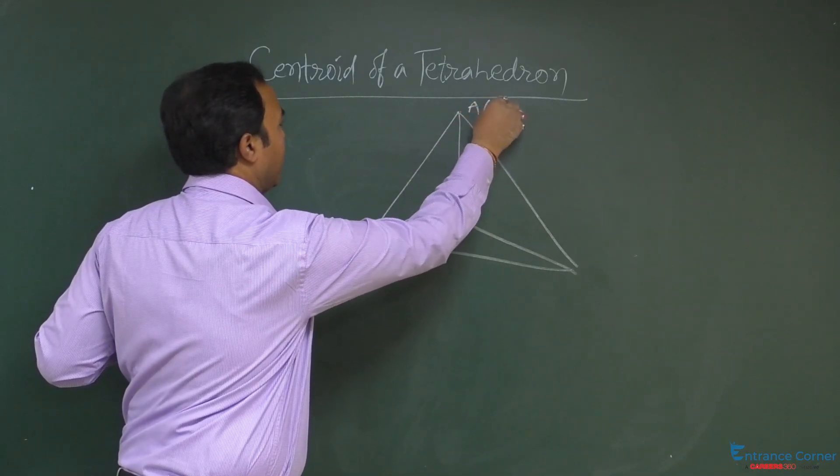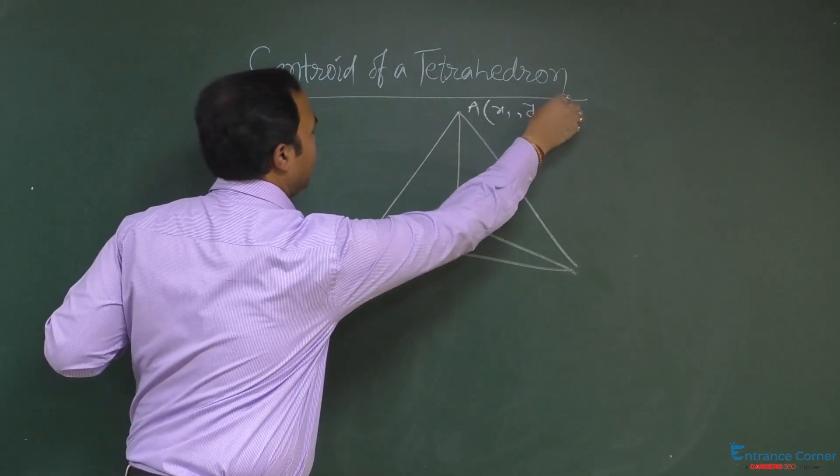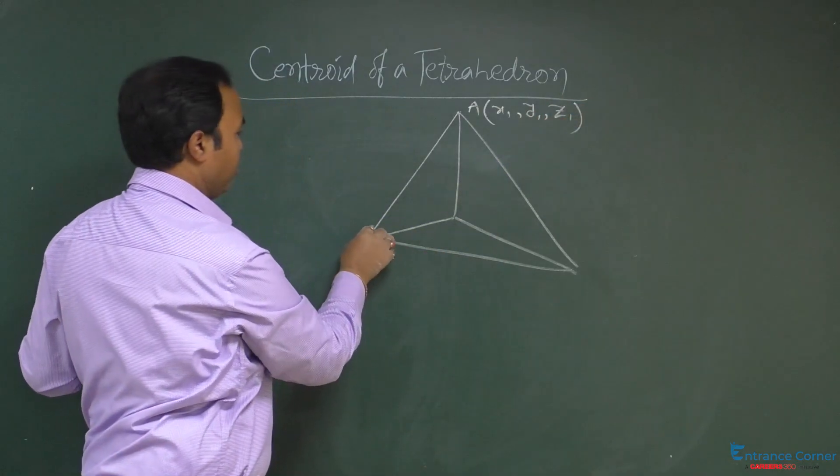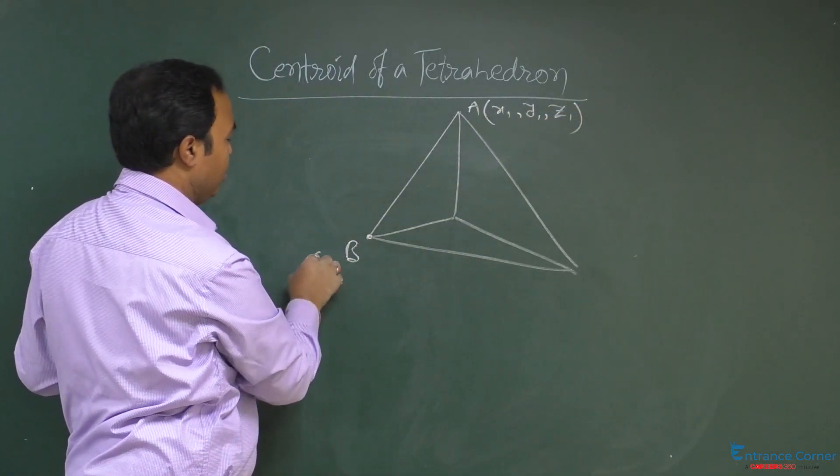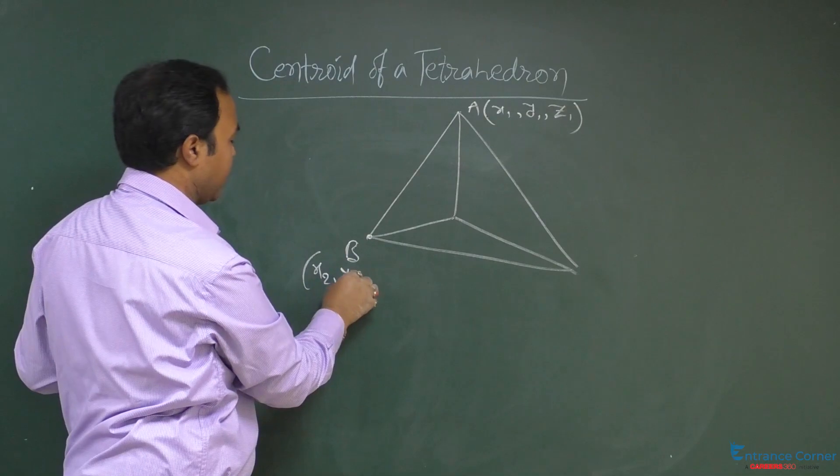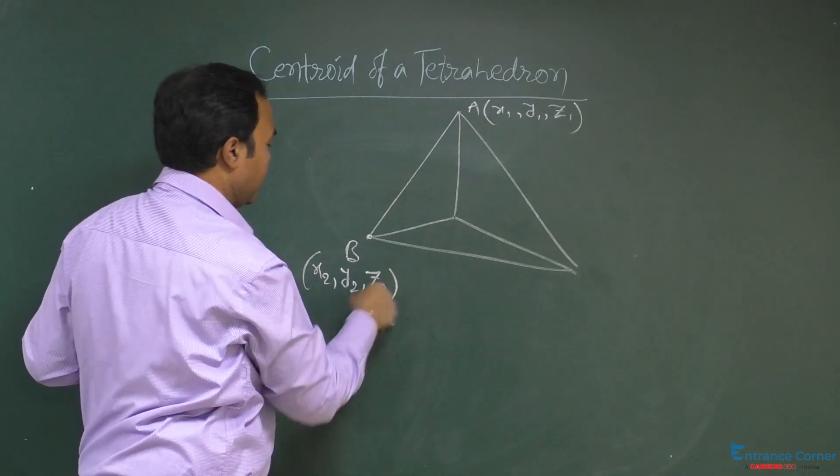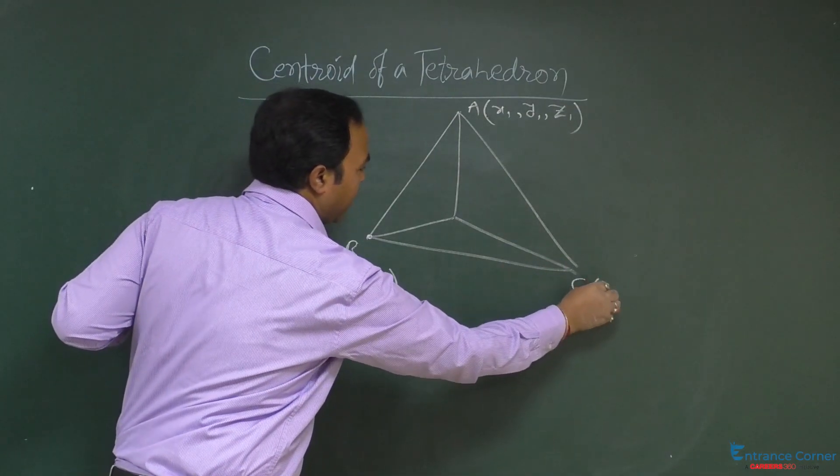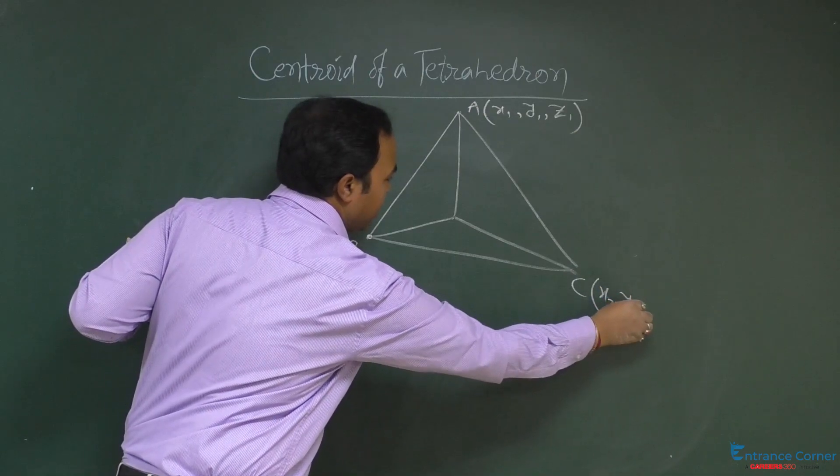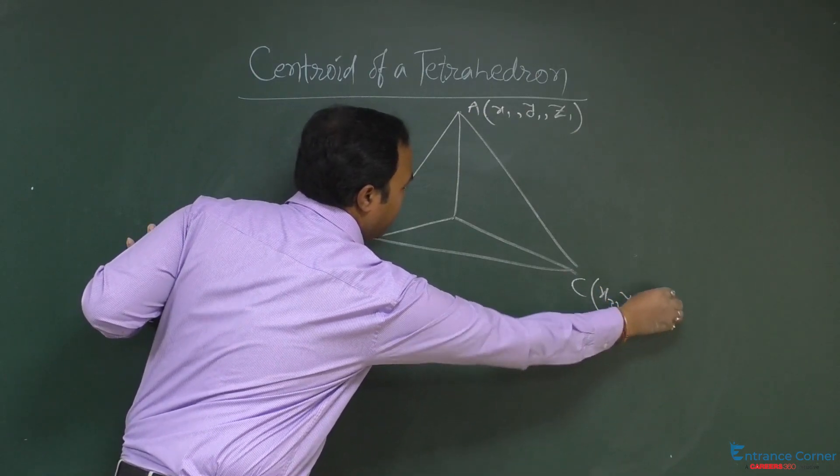A: (x1, y1, z1), B: (x2, y2, z2), and C: (x3, y3, z3).